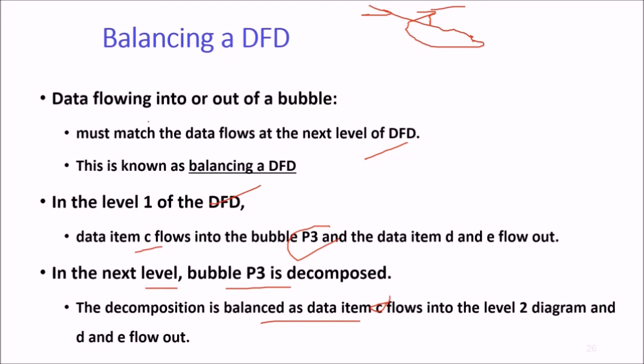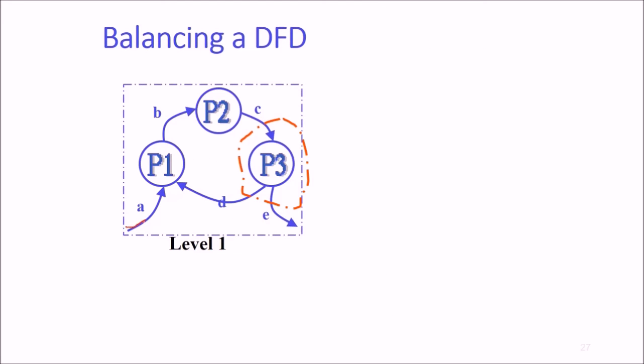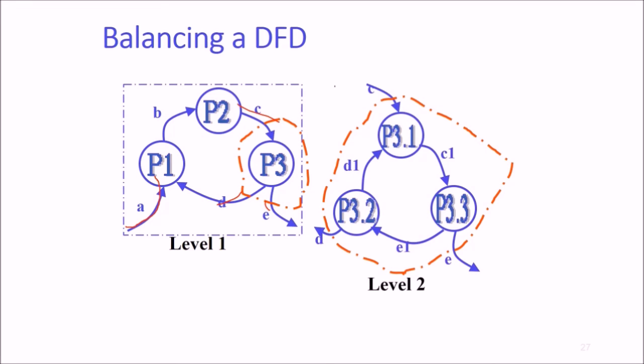Here A is incoming, B is incoming, but P3 has C incoming and D and E going. This is level 1. To make it level 2, I'm interested in P3. I have to show that in P3, C is coming and D and E going out. D and E should come out from some representation of P3.